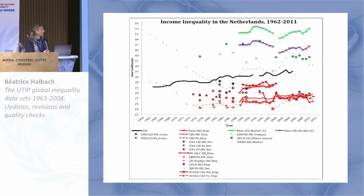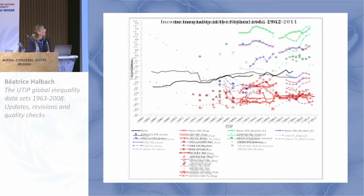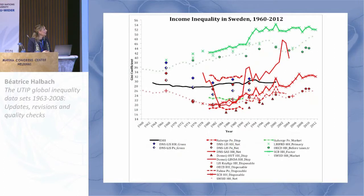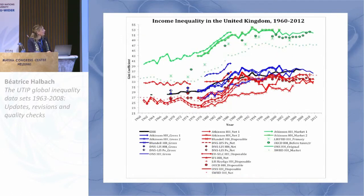Here we have the Netherlands. As I mentioned before, the very high market income inequality is what would be expected. Here's Spain. And Sweden — again, the high market income inequality. Here's the UK, which is a very well-documented country.